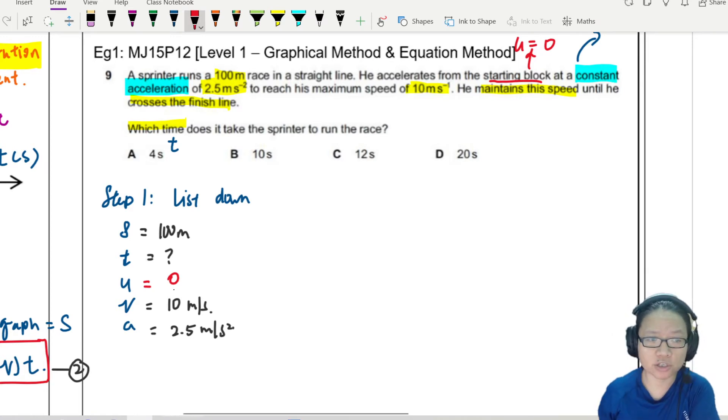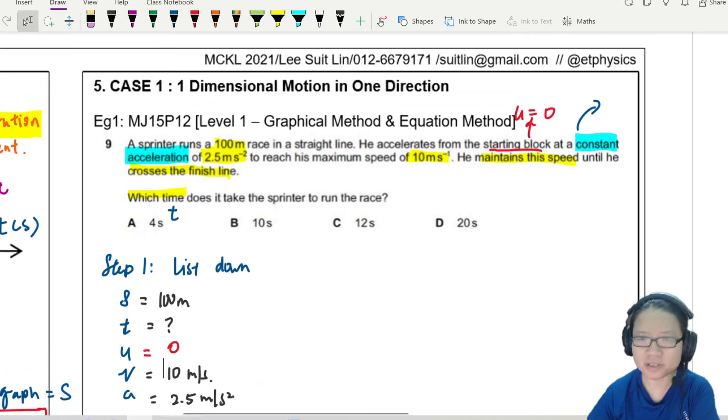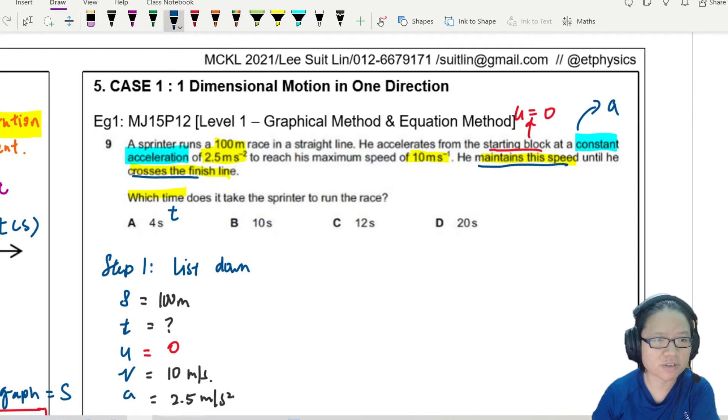Acceleration is constant. Is it always constant? Because later on, he says he maintains this speed until he crosses the finish line.